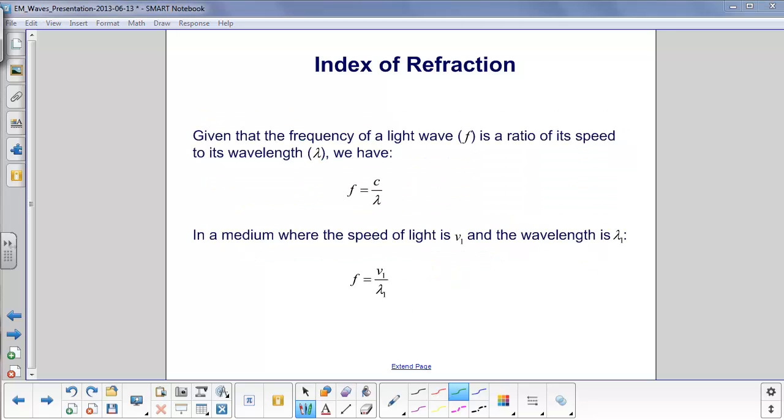We're going to do a little math now to come up with another equation for the index of refraction. We know that the frequency of any wave, so a light wave also, F is a ratio of its speed to its wavelength. So for light, we have the frequency of light is C over lambda.